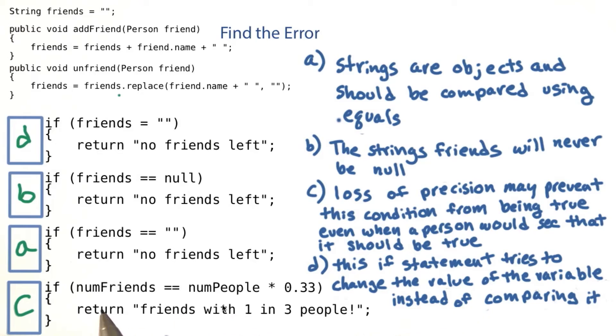In this last one, we say if the number of friends equals equals the number of people times 0.33, then you're friends with 1 in 3 people. But these are doubles, and doubles have precision loss.